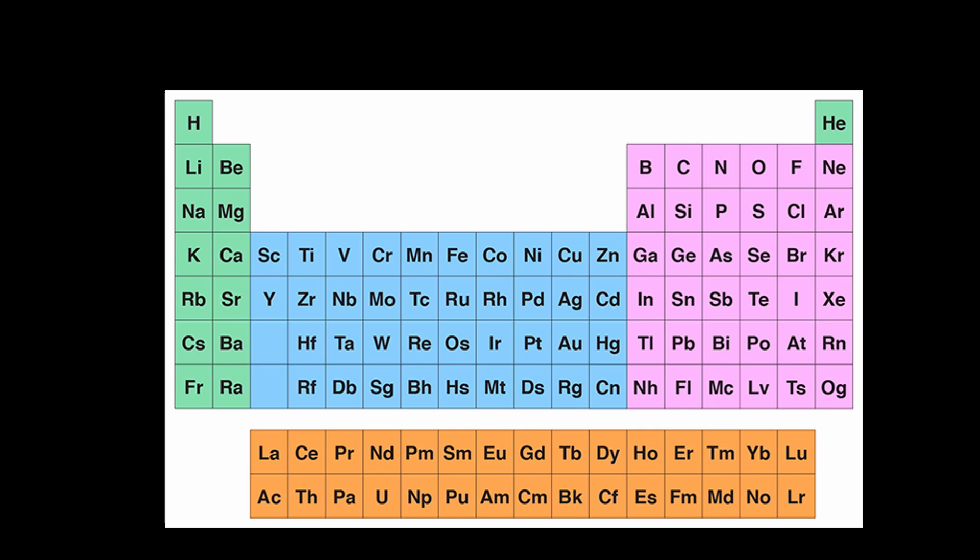The periodic table is also segmented into blocks of subshells: the S block, the P block, the D block, and the F block. And this is useful for understanding how many electrons go into each subshell.